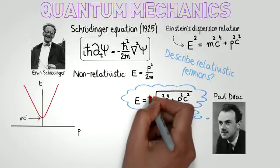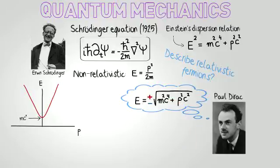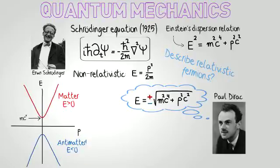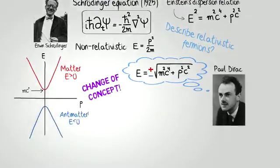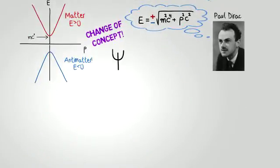He brilliantly realized that there was a whole new branch missing in the description. If the upper branch describes the usual particle matter, the lower one corresponds to antimatter, as he called it. This was a complete change of concept, where functions were not scalar functions anymore, but two-dimensional spinors.